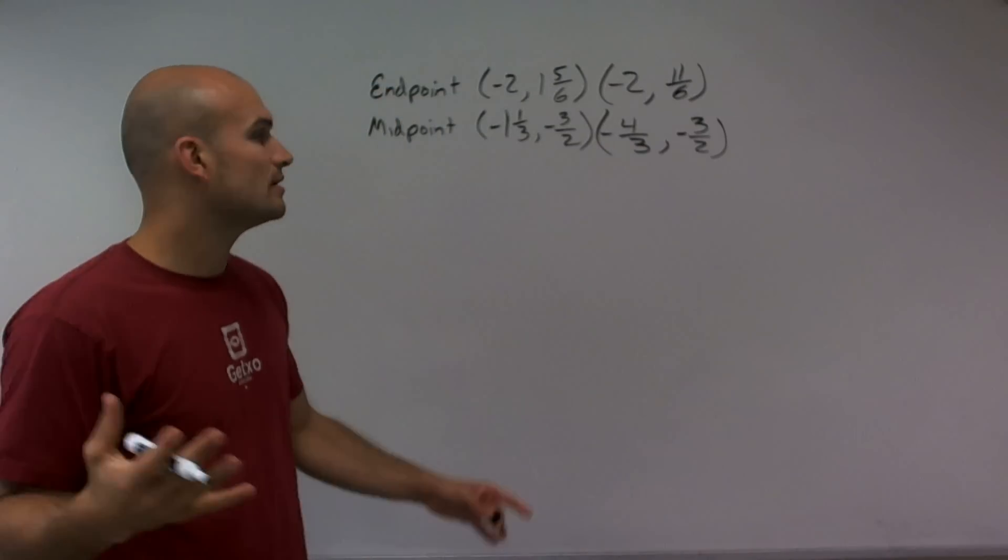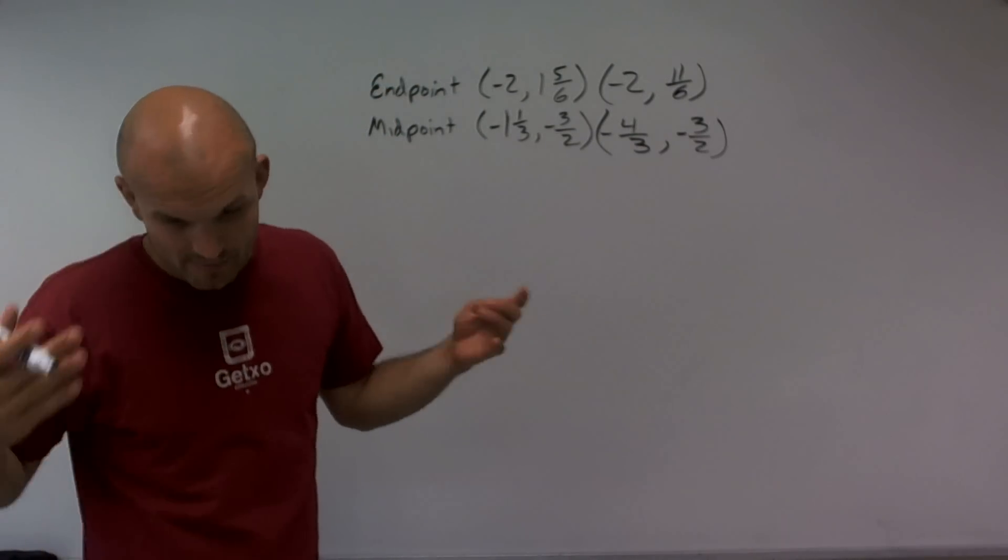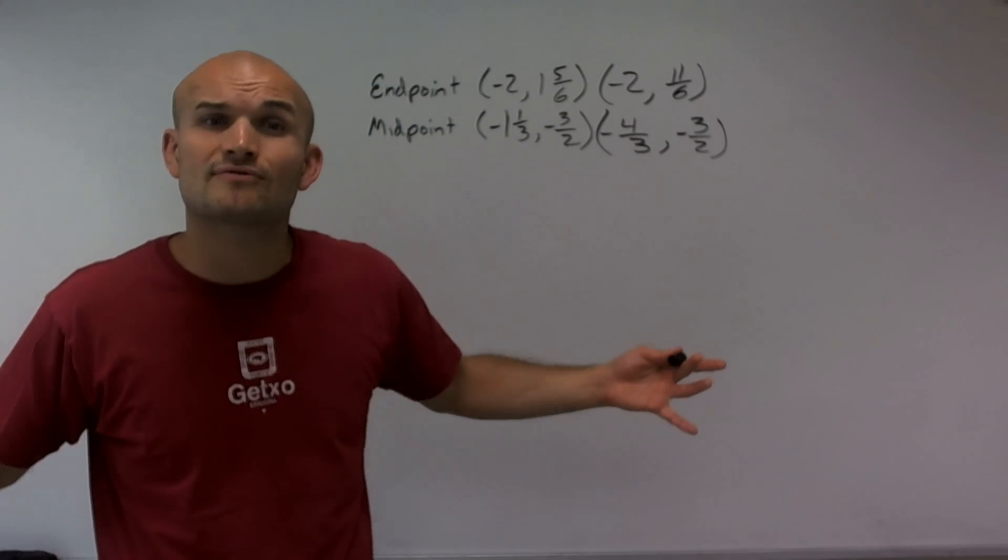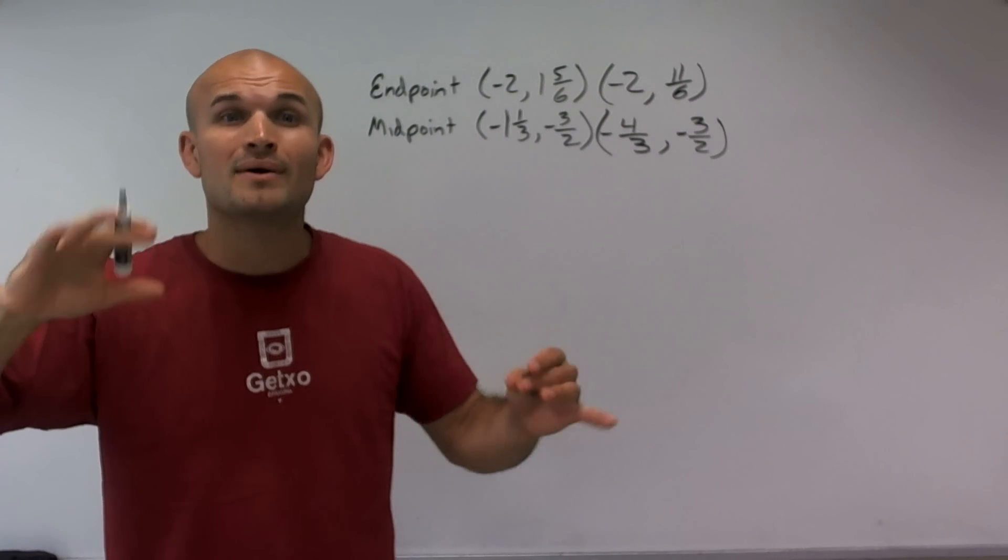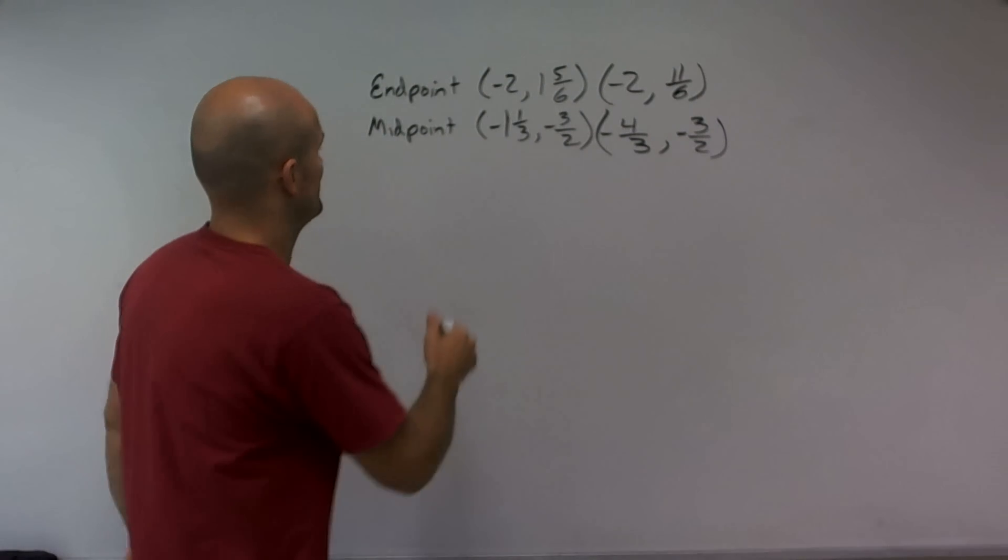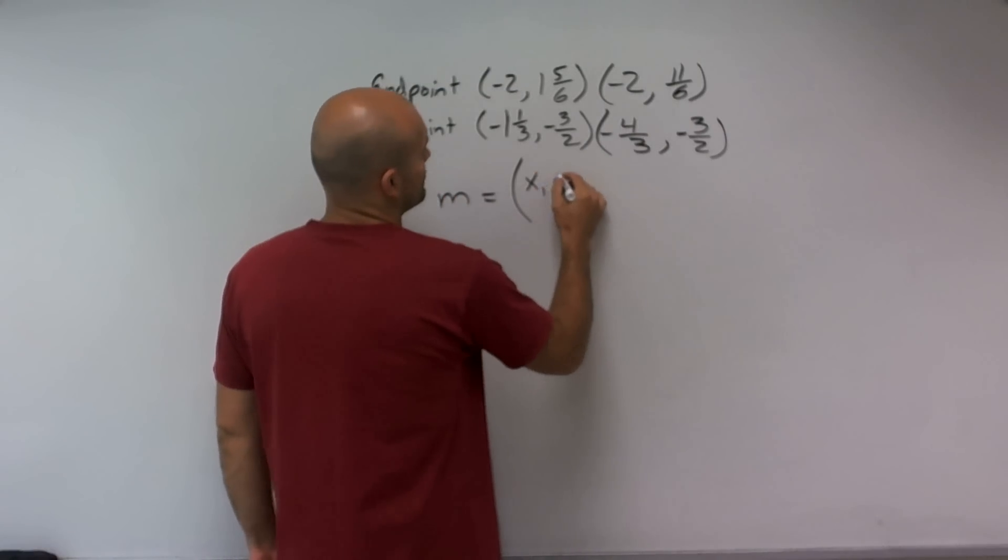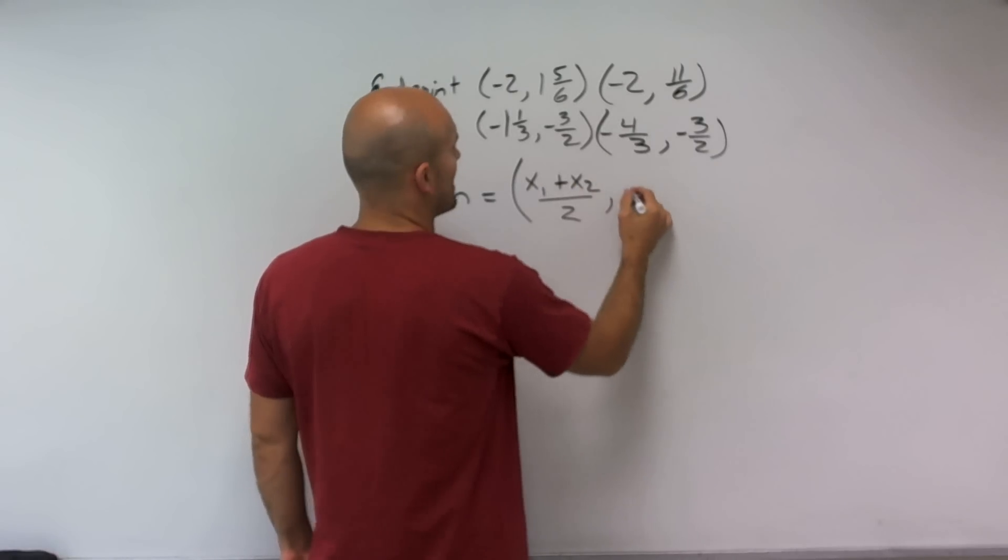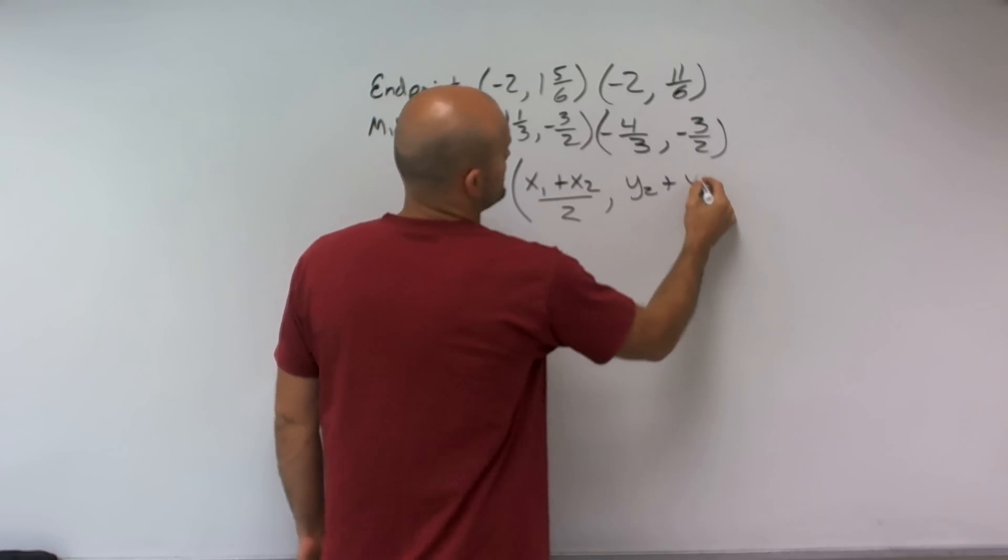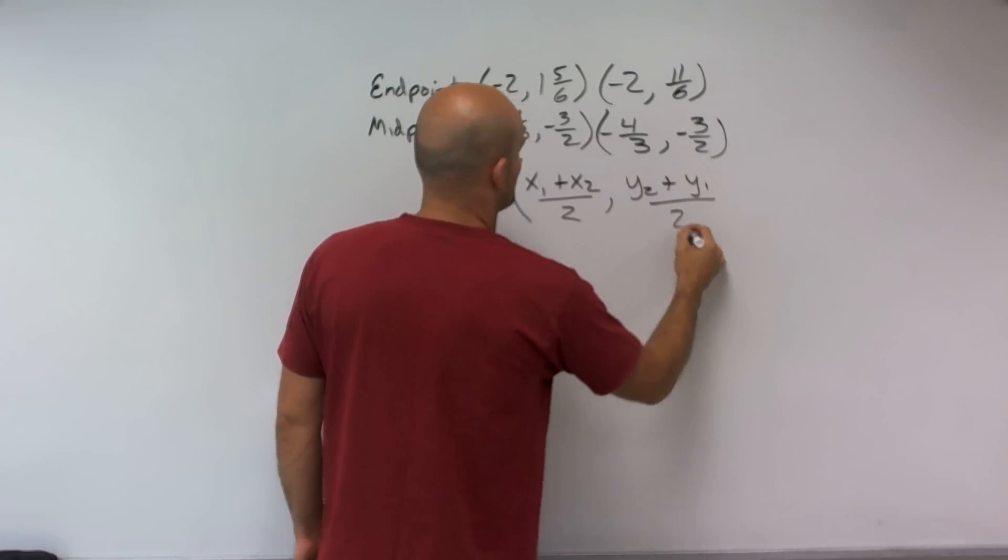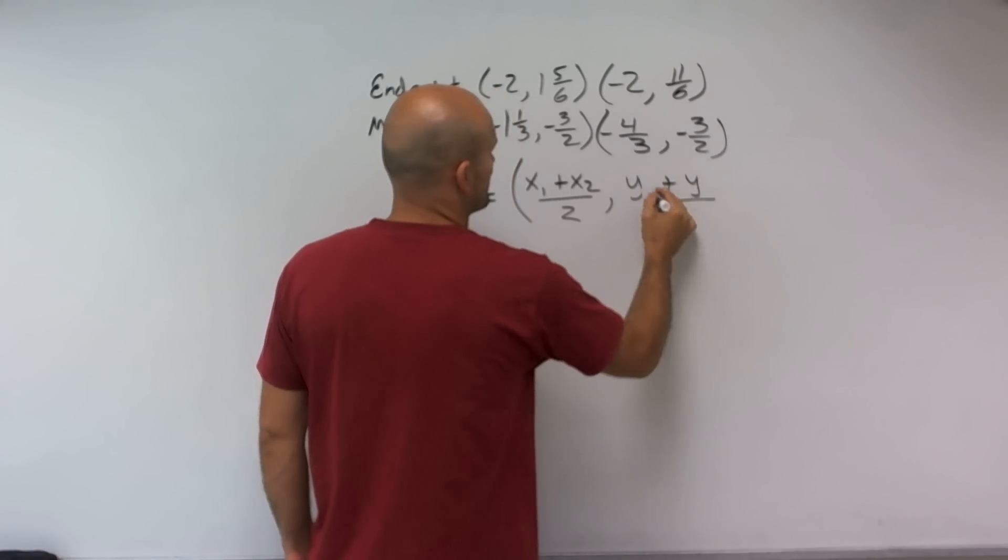So remember, if we have the midpoint and the endpoint, immediately the first thing I think about a midpoint is let's just write down the formula. Forget about trying to figure out the problem, just write down the formula. So the formula for a midpoint is x1 plus x2 divided by 2 comma y1 plus y2 over 2.